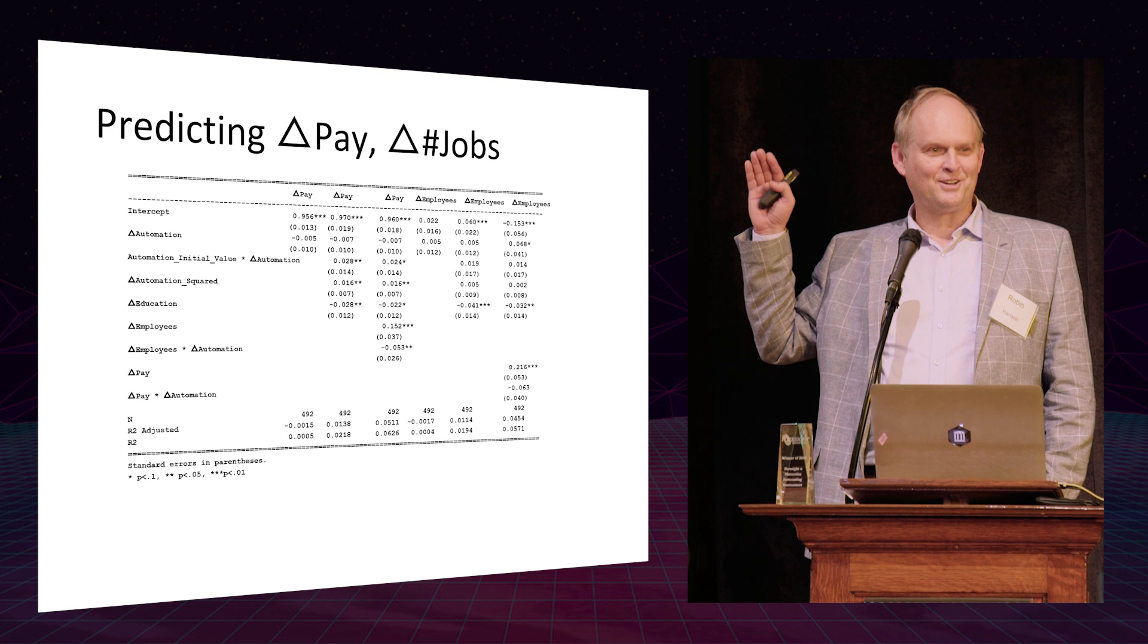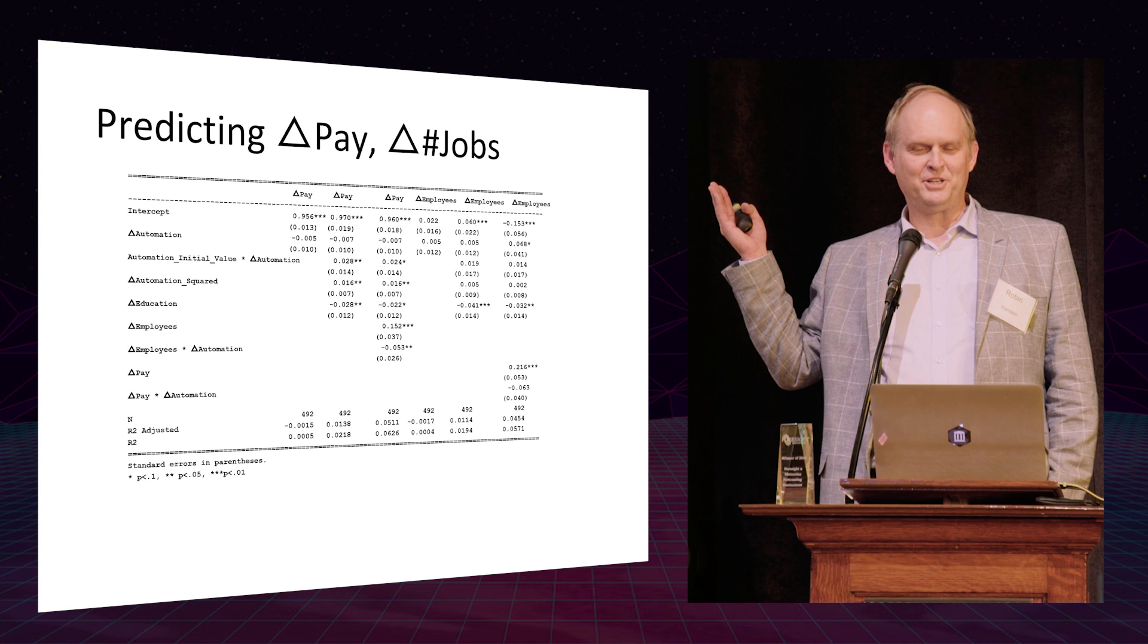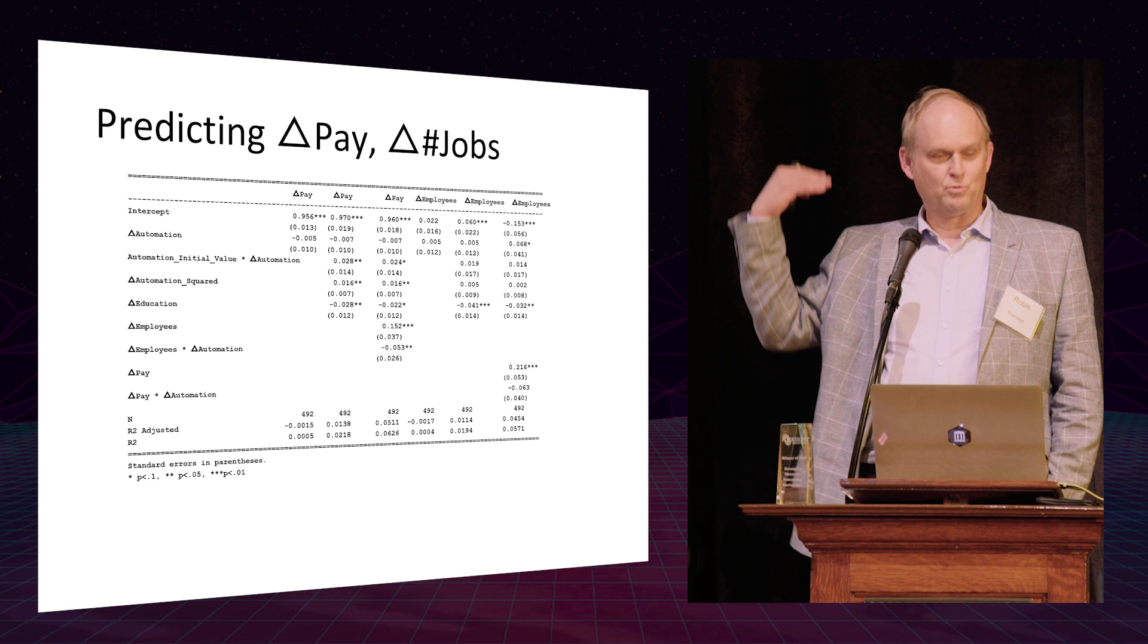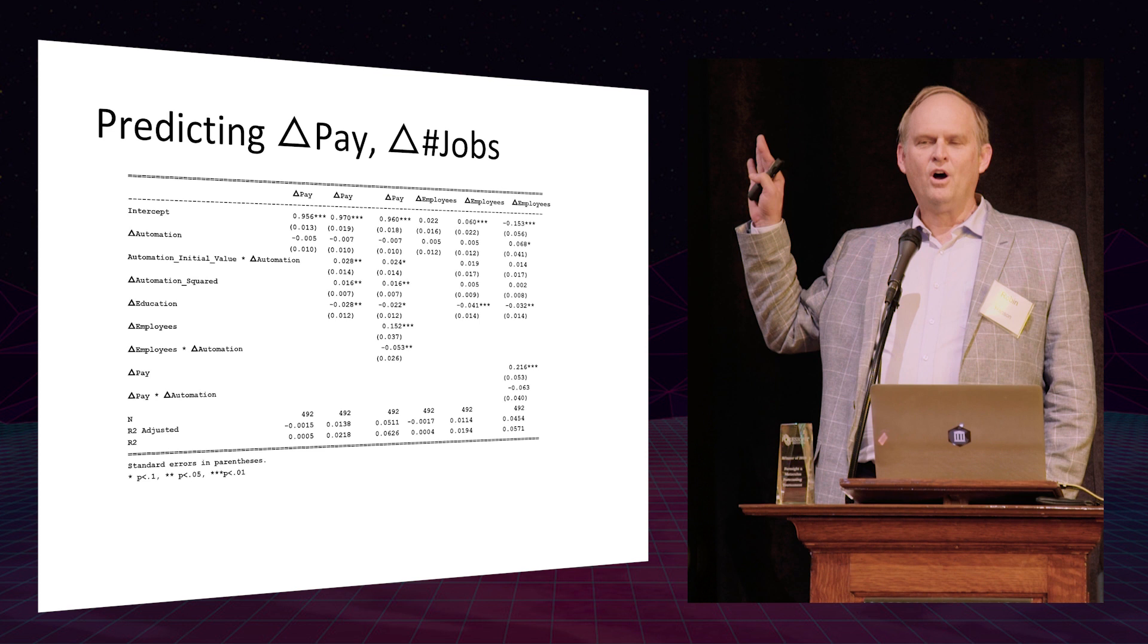Now, if we add more variables, we can start to see other interesting effects like when education goes up, that makes pay go down and number of workers go down. But these details aren't that interesting for us. The key message is on average, in the last 20 years, when jobs got more automated, they did not lose workers, they did not change pay.